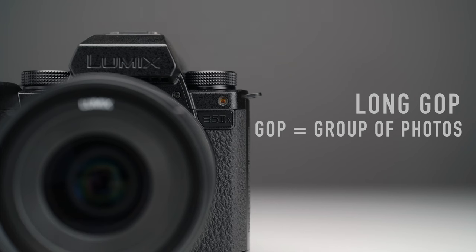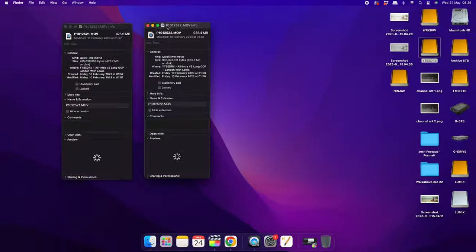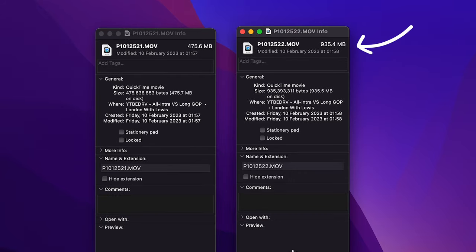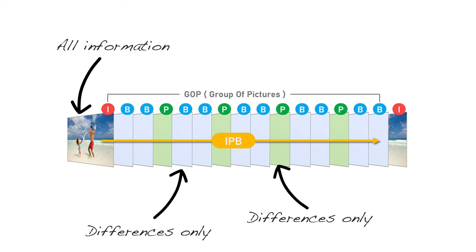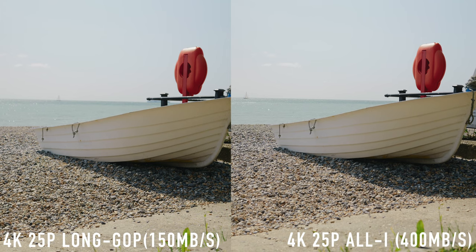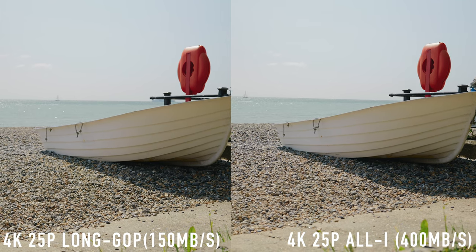The fundamental differences between all-intra and long GOP are actually really simple. The GOP in long GOP stands for group of photos, because long GOP compresses multiple frames together, whereas all-intra compresses each single frame individually. So even though all-intra is still compressed, the files are much larger and retain a lot more information. For example, filming a static scene where the background stays the same, a long GOP codec will essentially share pixels from another frame in the group, meaning not all information in each frame is captured — which makes static scenes an unfair comparison between the two.